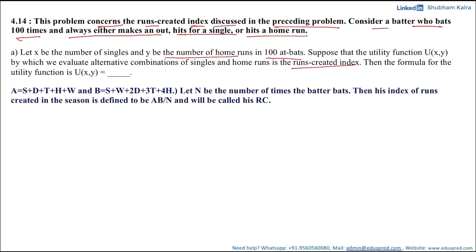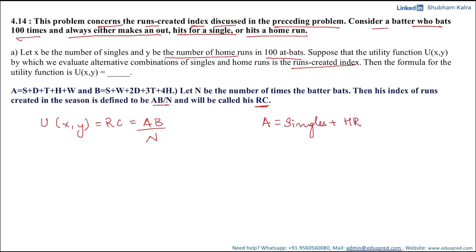The runs created index was defined as A times B divided by n, and this was called RC. We know that u(x, y) is nothing but the runs created index, given by AB divided by n. In our particular problem, since the person is only making either a single, a home run, or getting out, we omit doubles and triples. So A equals singles plus home runs.